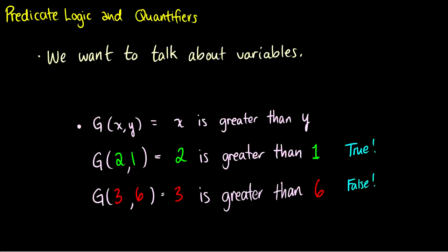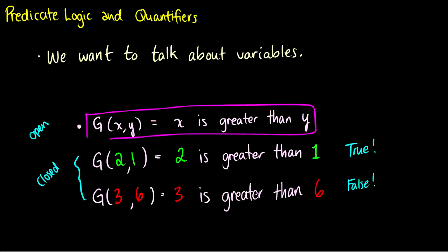Now what's different between these closed formulas and this open formula? Closed formulas have truth values and open formulas do not have truth values. Therefore, Gxy is not a statement, which means we can't even have it in propositional logic at all. We need predicate logic in order to say something like 'x is greater than y' and assign truth values to constants plugged into those variables.